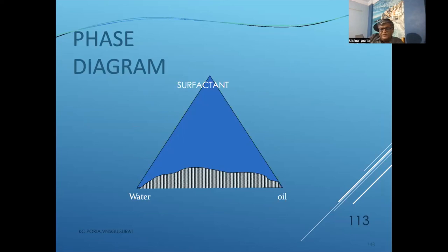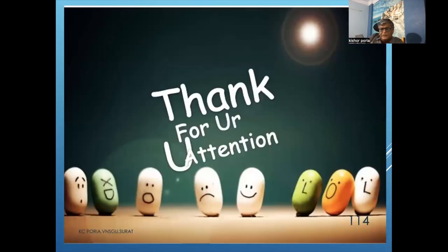The phase diagram of emulsions has three phases: the water phase, oil phase, and surfactant phase. This covers the different states of matter and special states of matter. Thank you for your kind attention.